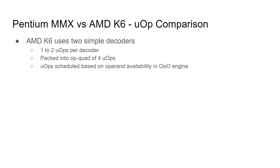To understand how the Pentium MMX executes the micro-operations, we should compare it to something more standard like the AMD K6. For this comparison, we will consider the dual-simple decoders on the K6, which can each emit between one and two micro-ops. These micro-ops are then packed into a set of four micro-ops for that cycle, which is called an op-quad.